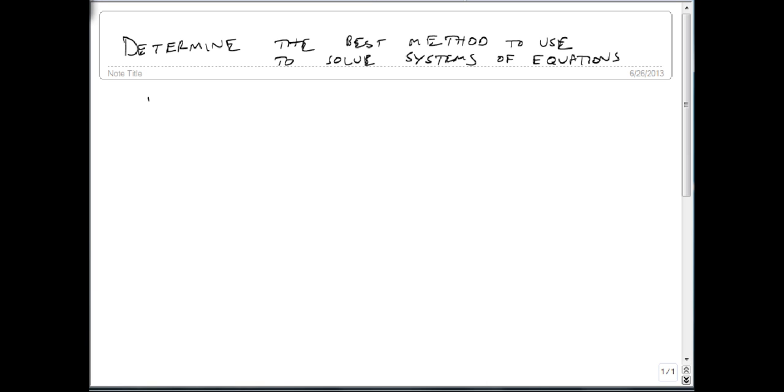First, what we want to look at is: is a variable already solved for? In other words, do I have something like y equals 3x minus 5 already? If I do, then I'm already set up for substitution, so I might as well use it.